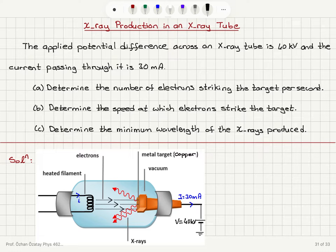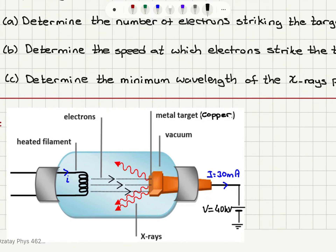Part A: Determine the number of electrons striking the target per second. Part B: Determine the speed at which the electrons strike the target. Part C: Determine the minimum wavelength of the X-rays produced. Electrons are boiled off this tungsten filament and they are accelerated towards a target.